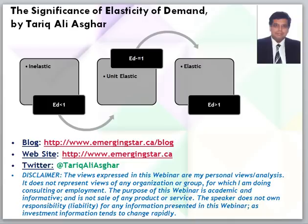Price elasticity and total revenue also reveal some interesting linkages. Total revenue is equal to price times quantity. If demand is elastic — that is, ED is greater than one — an increase in price leads to a decrease in revenue.